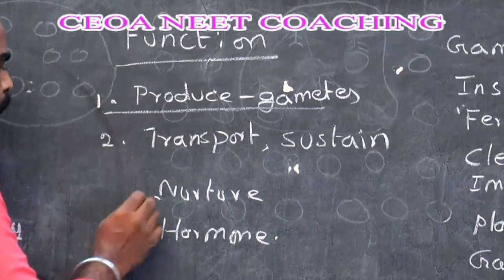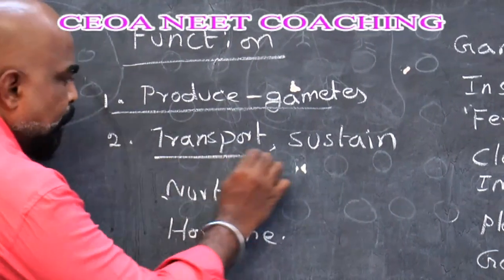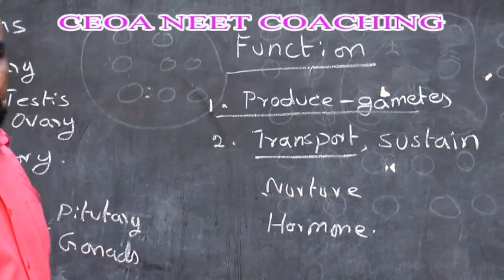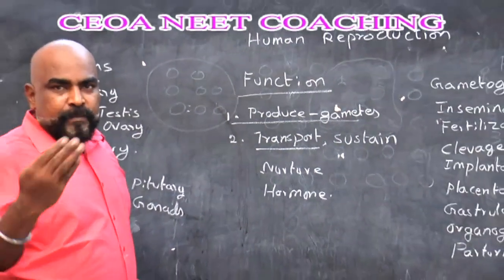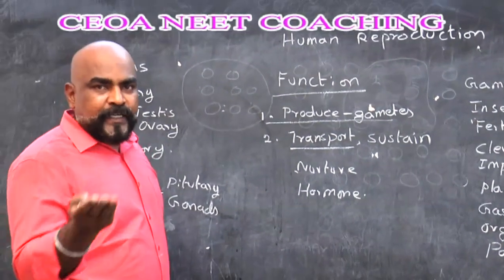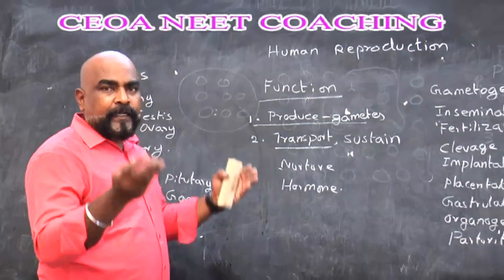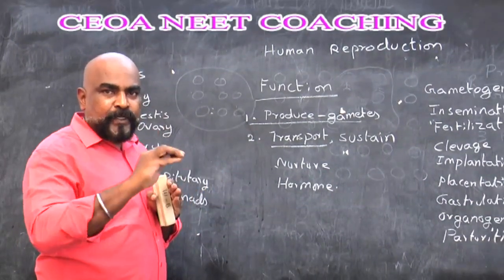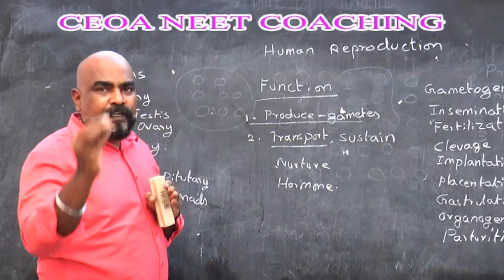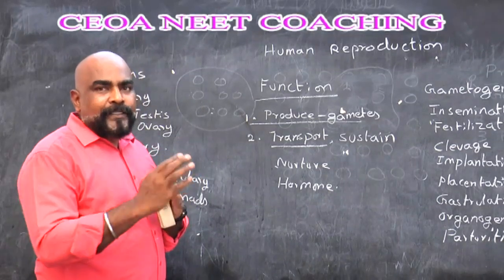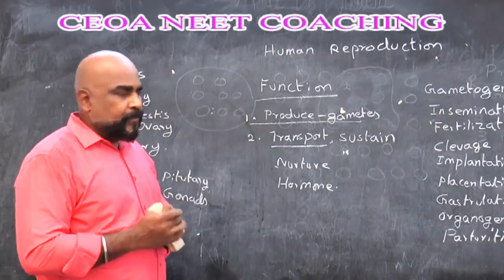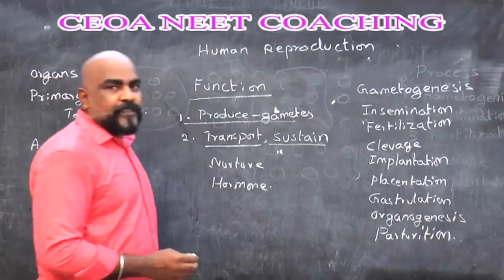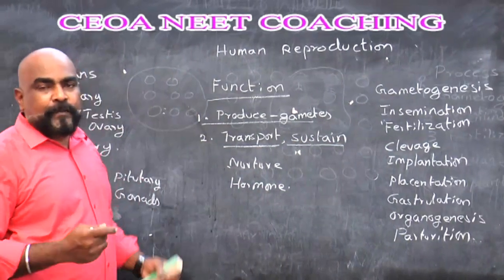The second function is that these gametes need to be transported. The sperm which is produced in the male needs to be transported to the female and fertilization occurs. The third function is sustaining the gametes — since they are living cells they need to be provided with food and other essential things, and these are provided by the reproductive system. Also, the reproductive system produces hormones, and the reproductive system is mainly regulated by hormones secreted by both the pituitary gland as well as the gonads.